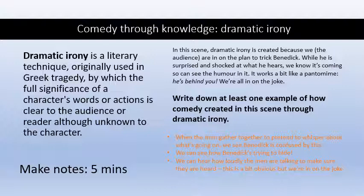Dramatic irony is a literary technique originally used in Greek tragedy by which the full significance of a character's words or actions is clear to the audience or reader, although unknown to the character. So basically, it's the audience knowing more than the character does. In this scene, dramatic irony is created because we, the audience, are in on the plan to trick Benedict. While he is surprised and shocked at what he hears, we know it's coming so we can see the humour in it.